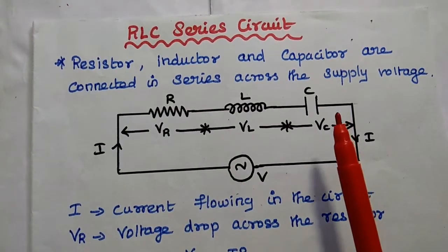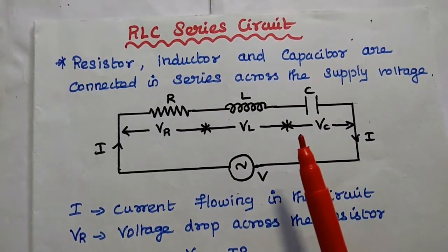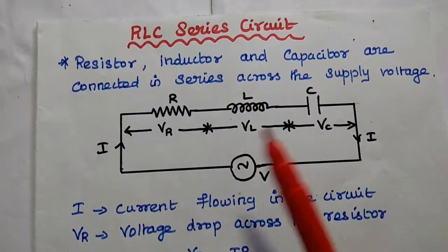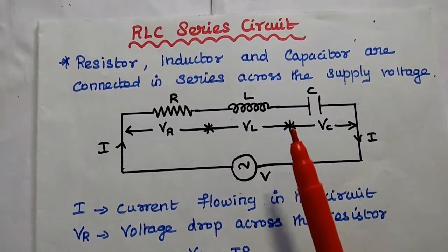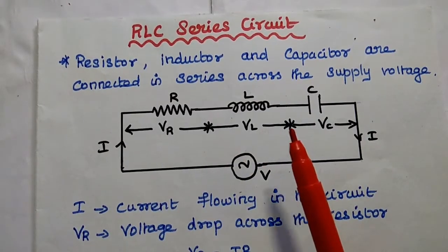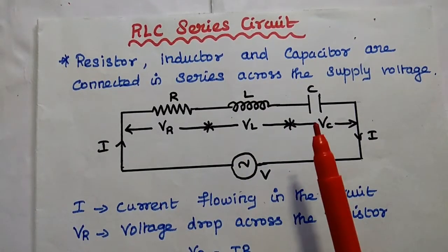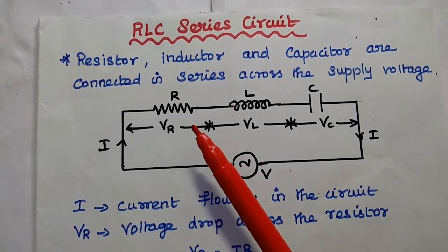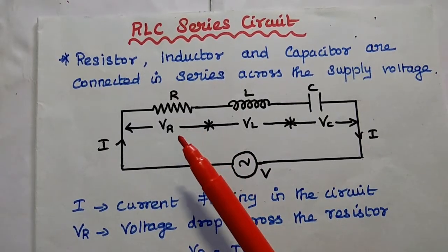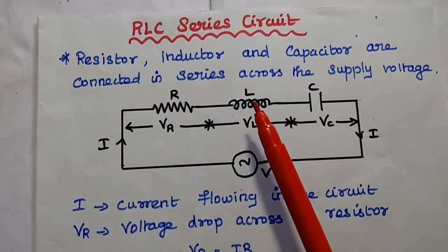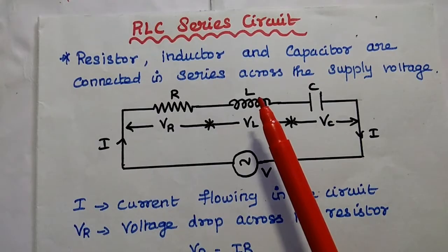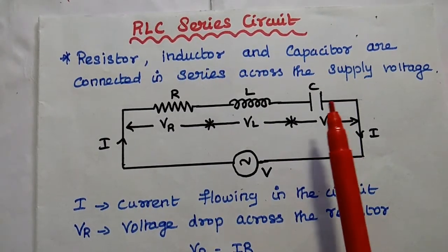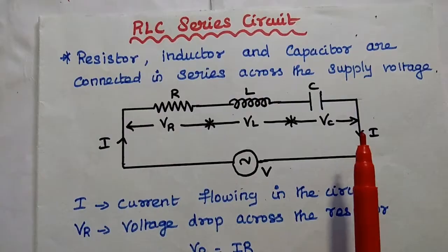Since all these elements are connected in series, the current is same in the circuit but the voltage is divided across the elements. The voltage drop across the resistance is Vr, the voltage drop across the inductance is Vl, and the voltage drop across the capacitance is Vc.